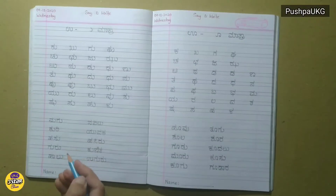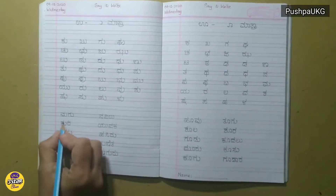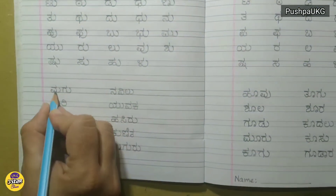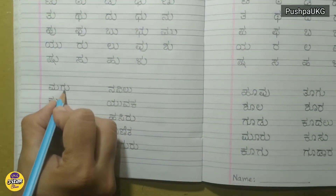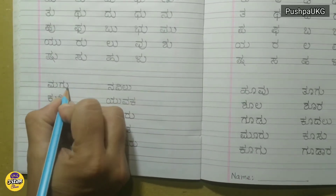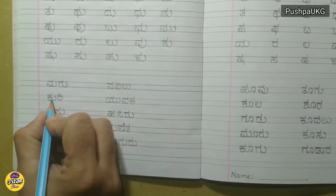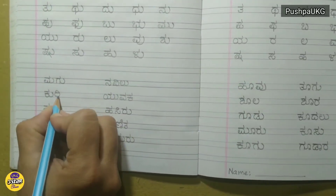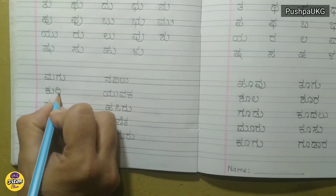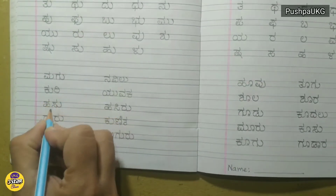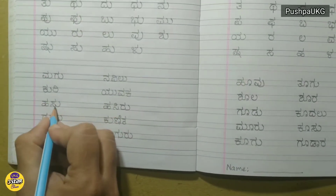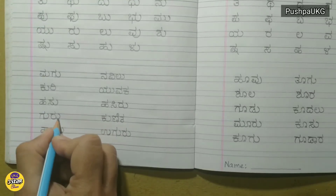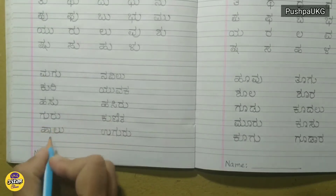Now let us read these words. Ma plus Gho plus U, Magu. Ke plus U, Ri, Kuri. Ha, Su, Hasu. Gu, Ru, Guru.